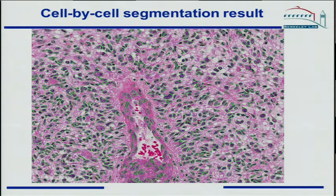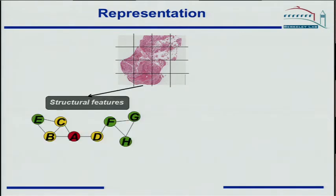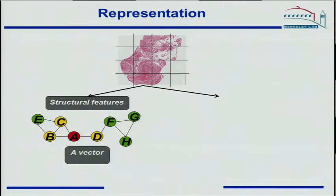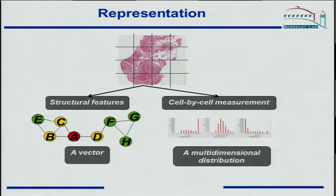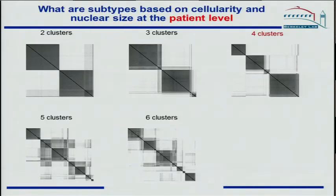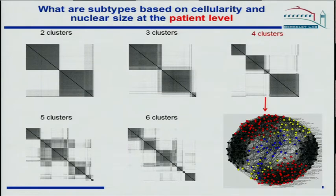Now that we can delineate nuclear features, structural features are computed block by block, where nuclei formation and nuclei are represented as a graph, and a number of features are computed from the graph. Simultaneously, we make measurements on a cell-by-cell basis, yielding a multidimensional density function. This is then normalized across tissue sections. For the GBM data, we end up with four different subtypes strictly based on morphometric features.